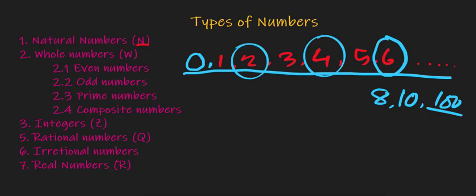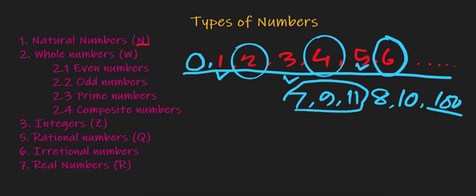What is an odd number? When a number is not divided by 2 without any fraction, it is known as an odd number. Like in this series: 1, 3, 5, 7, 9, 11 — these are actually odd numbers.